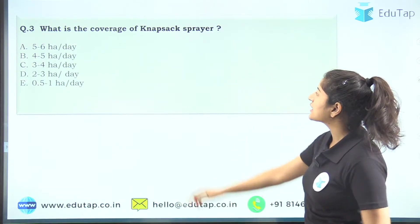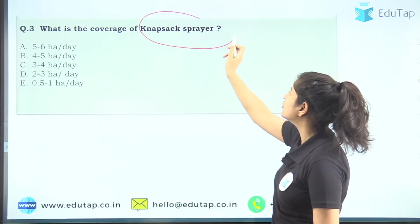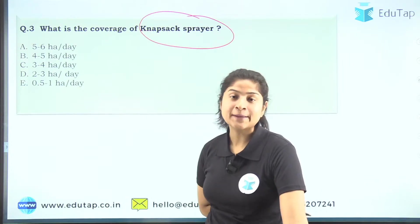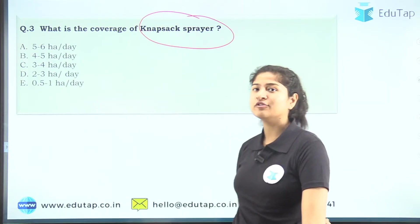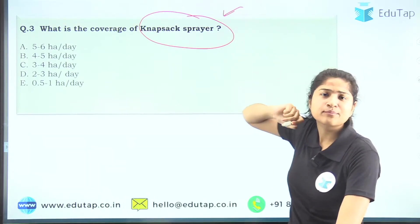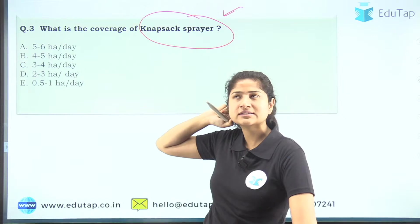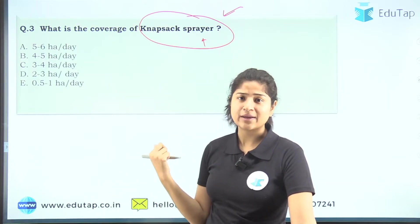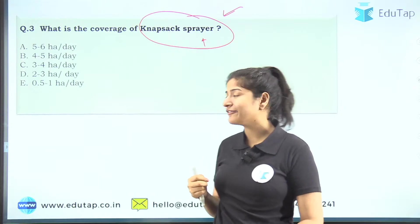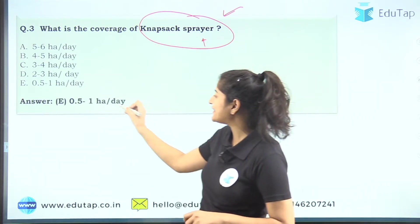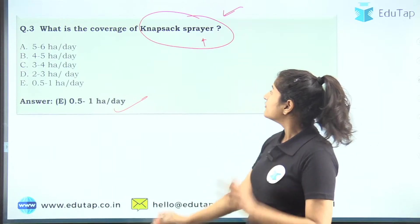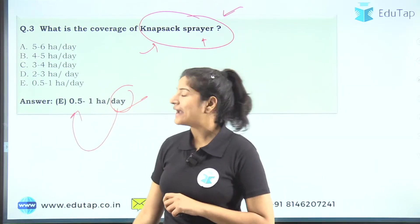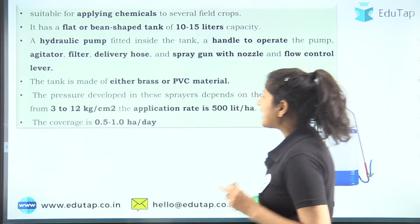The next question: what is the coverage of a knapsack sprayer? We are now looking at implements used to spray chemicals in the field. The knapsack sprayer is quite important from an examination point of view. The correct answer is option E, that is 0.5 to 1 hectare per day — meaning with the help of a knapsack sprayer you can cover 0.5 to 1 hectare of land in a day.